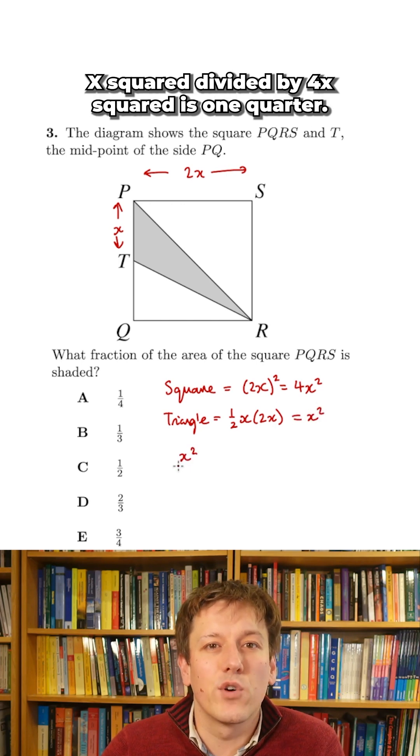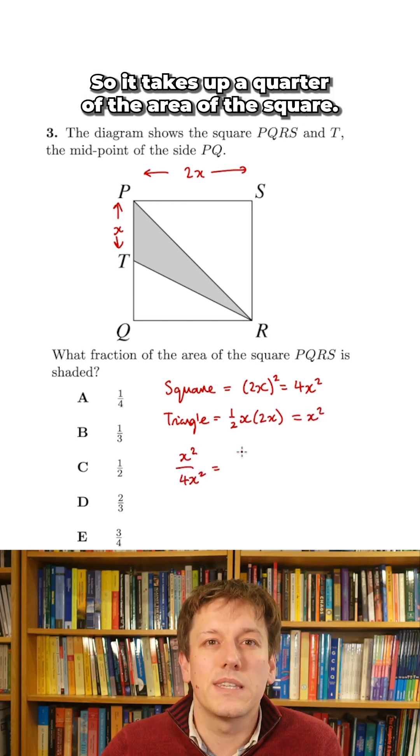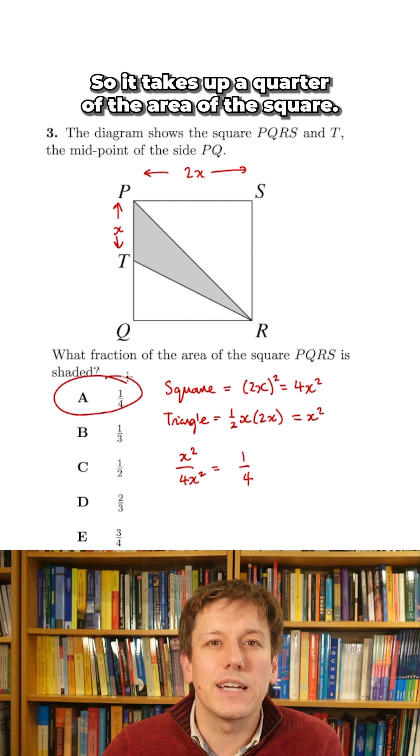x squared divided by 4x squared is one quarter, so it takes up a quarter of the area of the square.